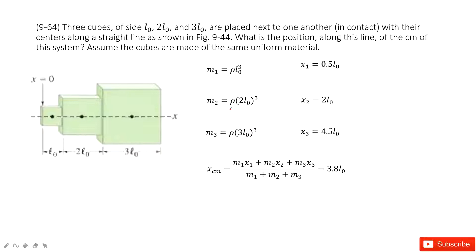we have three cubes with the same density but different volumes. This cube, the first, has side length L0, the second one is 2L0, the third one is 3L0. We need to determine the center of mass for them.